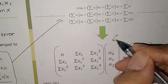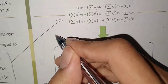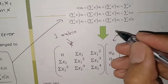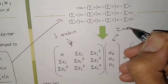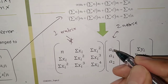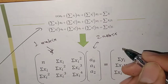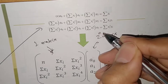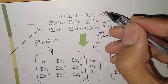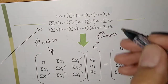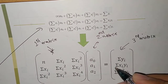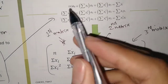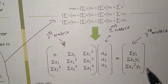On the second matrix, we have A0, A1, and A2. And on the third matrix, we have the corresponding right-hand side values. So we are going to make this simple by using matrix form.